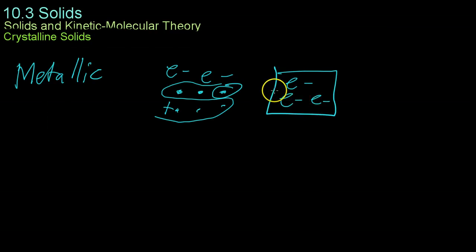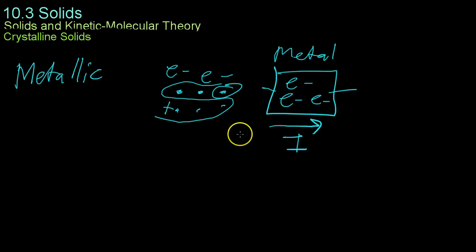And this means that if you were to put a voltage difference across this metallic crystal, what would happen is these electrons would be able to flow very easily, forming a current. And this is why metallic crystals tend to be very good conductors.